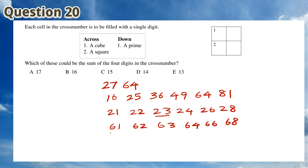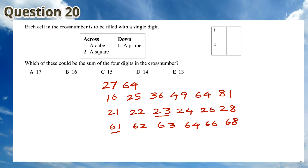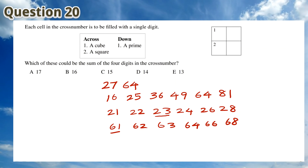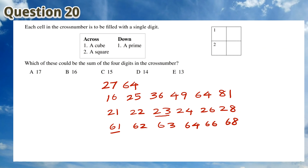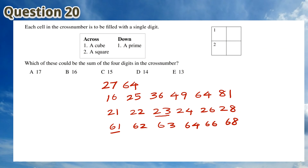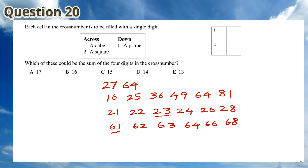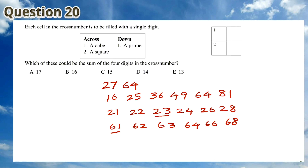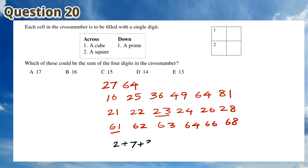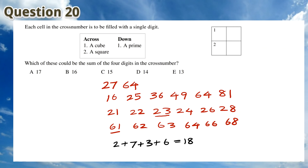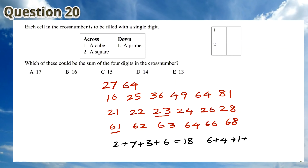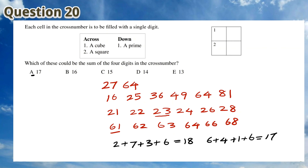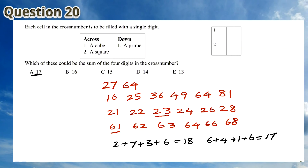So the two possibilities are: 1 across is 27, 1 down is 23 and 2 across is 36; or 1 across is 64, 1 down is 61 and 2 across is 16. The sum of the 4 digits is either 2+7+3+6 = 18, or 6+4+1+6 = 17. Of these two possibilities, only 17 is one of the options. This means that the answer is A.